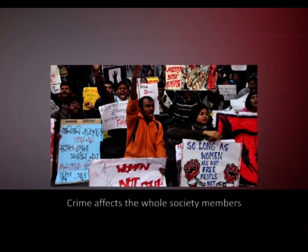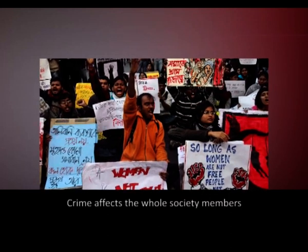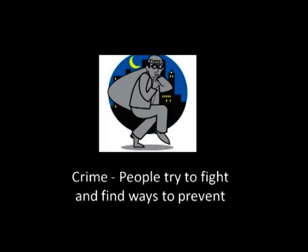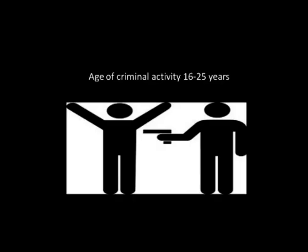Now let us discuss the consequences of crime and corruption. Crime affects the whole society by causing insecurity, which destroys the livelihood of people. It results in death of society members and can lead to destruction of property. Crime is a worldwide issue that people try to fight and prevent. It has been in existence from the beginning of humanity. The peak age of criminal activity is during the years between 16 to 25.